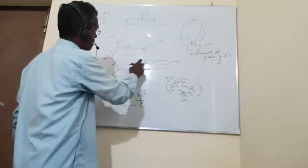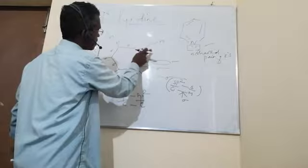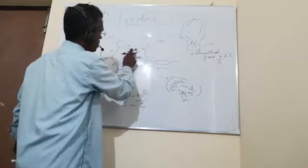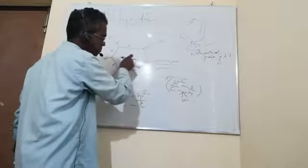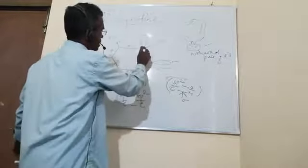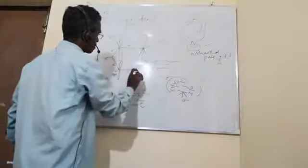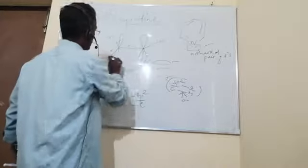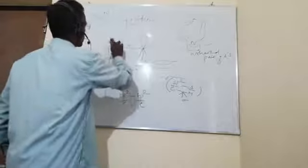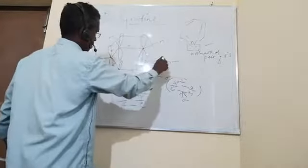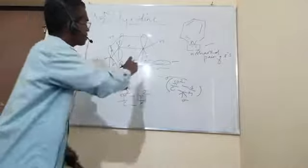After the sp2 hybridization, each carbon and the nitrogen have one unhybridized 2pz orbital remaining. Each carbon has one electron left in that unhybridized 2pz orbital. These 2pz orbitals undergo lateral overlap, forming a pi bonding molecular orbital that contains six electrons.